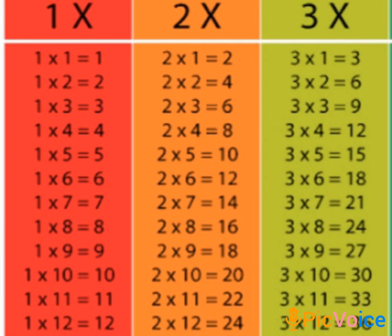Okay students, now we are going to table 1, 2, 3. 3 6s are 18, 3 7s are 21, 3 8s are 24, 3 9s are 27, 3 10s are 30, 3 11s are 33.